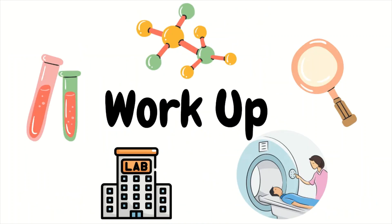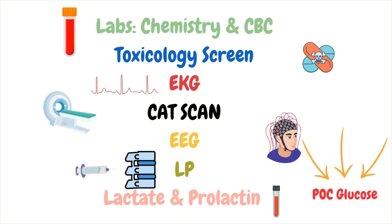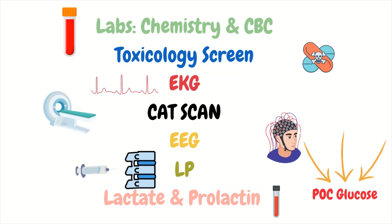Now let's get into the workup of seizure patients. Among the first things to obtain is a POC blood sugar to ensure that is not the cause — get a blood sugar. Then you have labs like a chemistry panel to get the electrolytes including sodium, and a CBC; if the CBC comes back elevated, it can signal an infectious source. There's also a toxicology screen which can look for things like meth and cocaine. An ECG can help rule out a dysrhythmia or other heart issue that could have caused the patient to collapse, signaling a syncopal episode rather than a seizure. A CT scan is definitely used, especially in first-time seizures, to rule out brain pathology like a tumor, brain bleeds, brain abscesses, and other conditions.